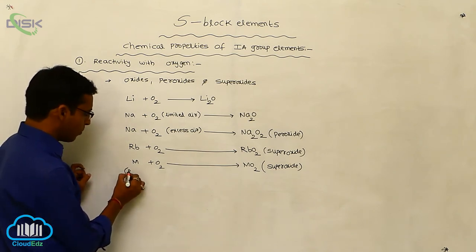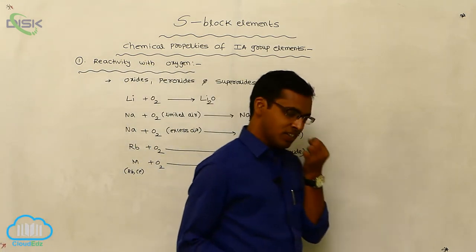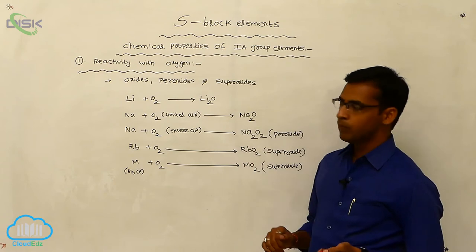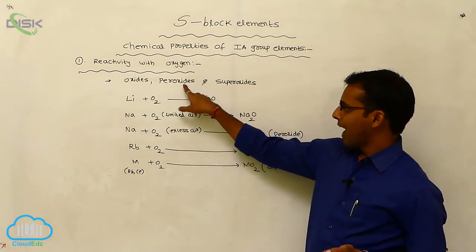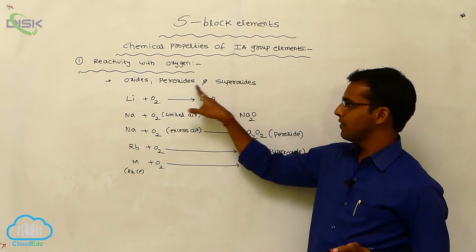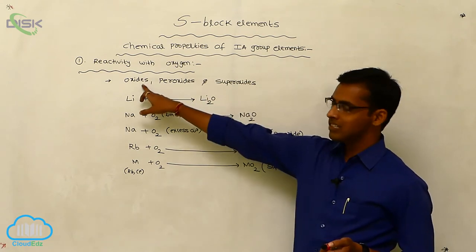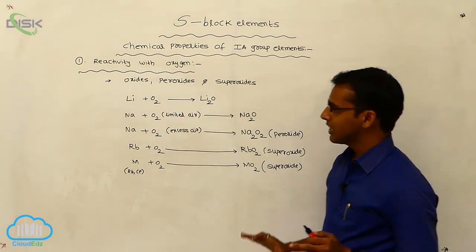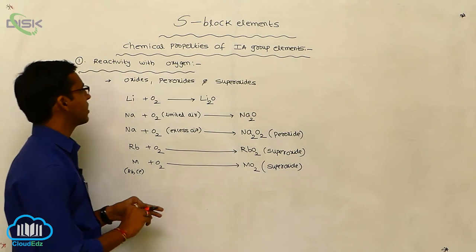Here M refers to rubidium and cesium. Regarding the nature of oxides from top to bottom in the group, peroxide and superoxide behavior increases, but oxide behavior totally decreases. This is the reactivity with oxygen.